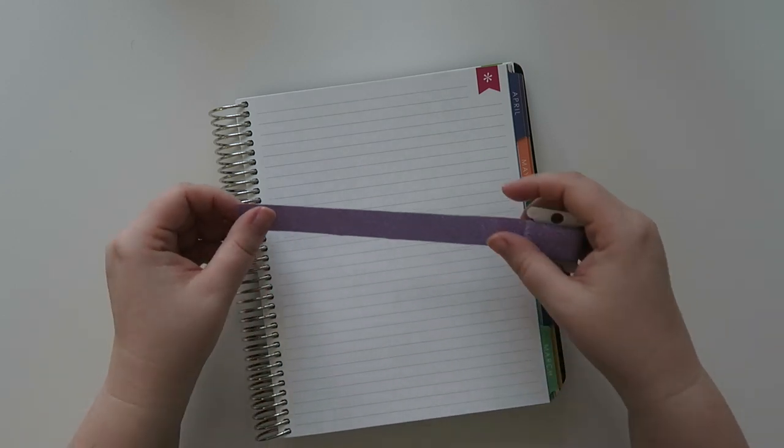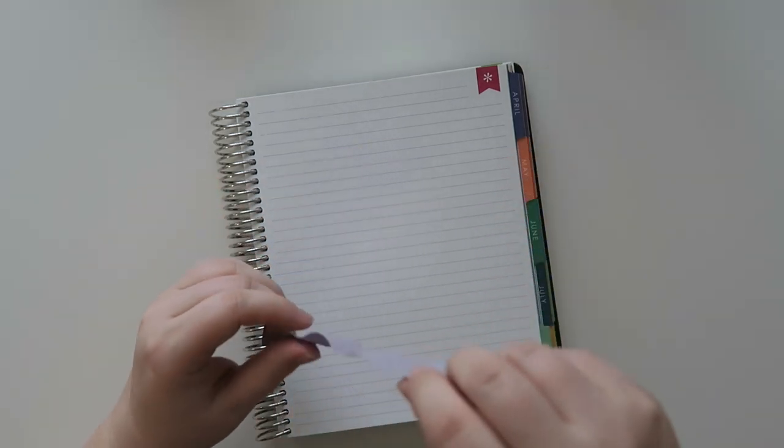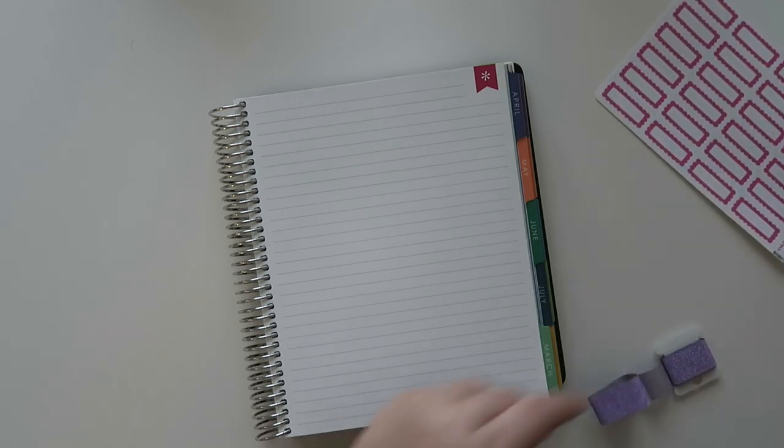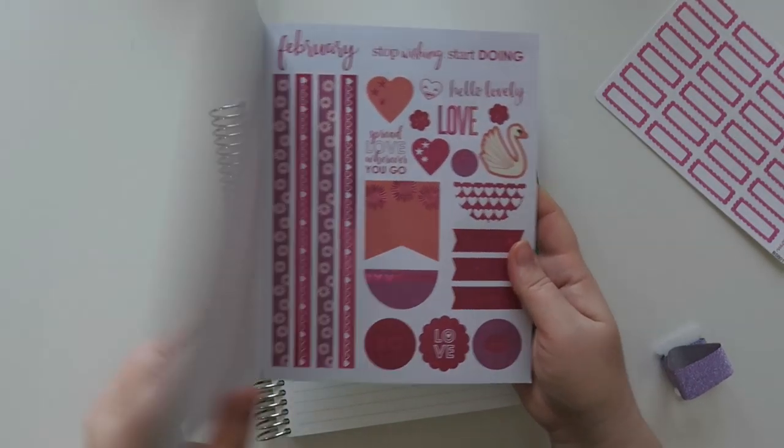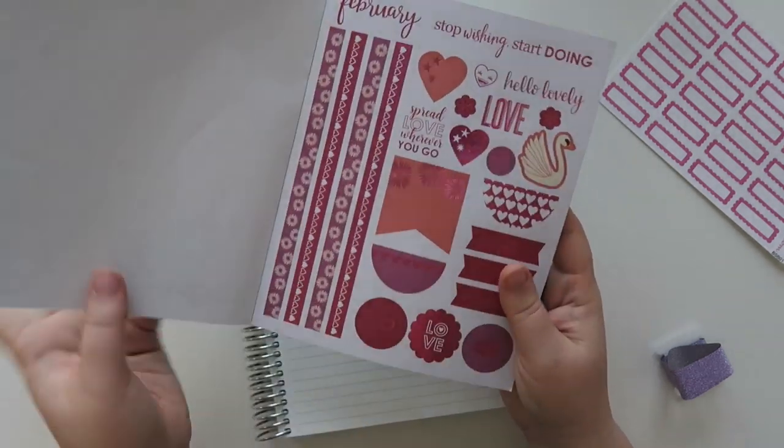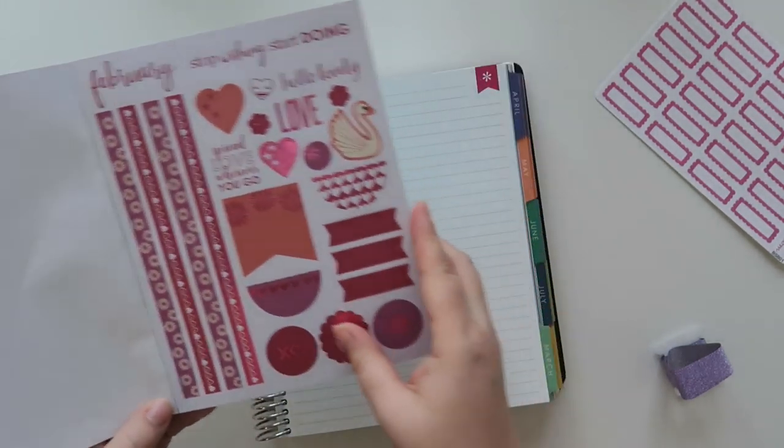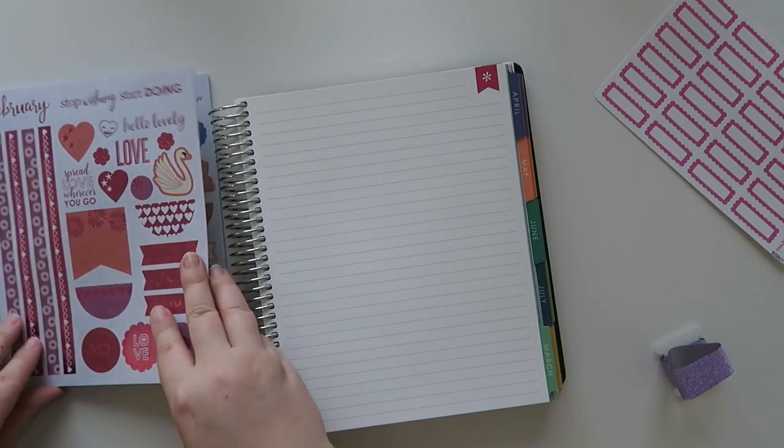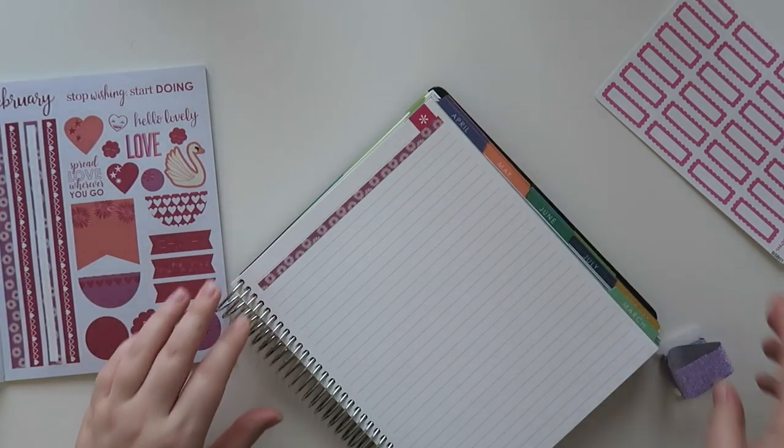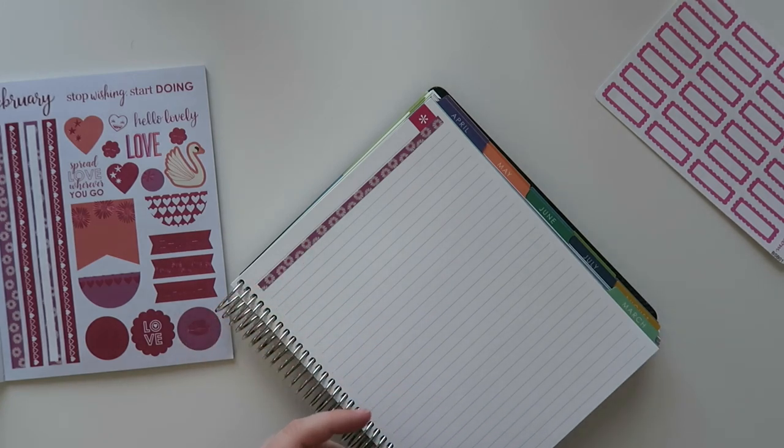I decided to go with a pink and purpley kind of a thing this month. I kind of took inspiration from this Erin Condren book like I did last month. I used some of these. I'm just gonna go for it. I thought that these were kind of cute.